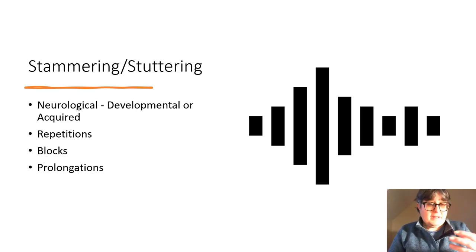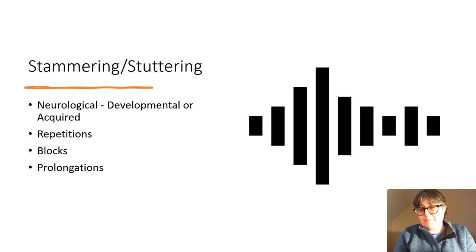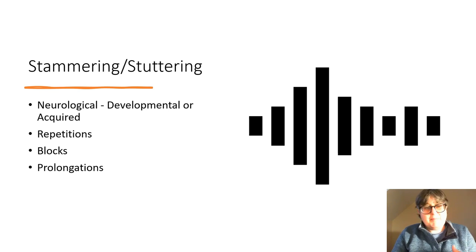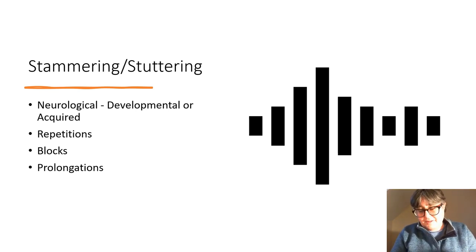Stammering, as a neurological condition, can be developmental — meaning it starts in childhood as a child learns to speak. But it may also be acquired as a result of a stroke, a brain injury, or a disease of the nervous system. In terms of developmental stammering, approximately eight percent of children will stammer at some point. Some of them will spontaneously recover, which leaves between one and three percent of adults who stammer.